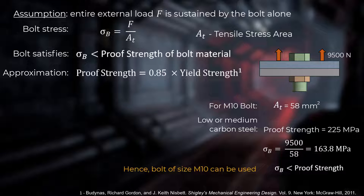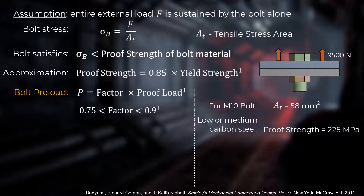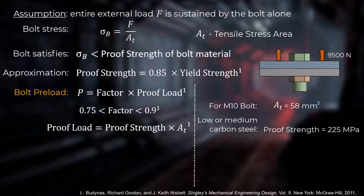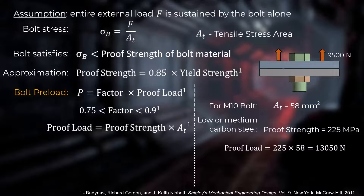Once we have picked an appropriately sized bolt, the next step is to calculate the preload to be applied to that bolt. Bolt preload is calculated based on the criteria that under normal operating conditions, the total load carried by the bolt should not exceed a fraction of its proof load. The proof load for a bolt is calculated using the shown equation. For the M10 bolt in our example, we calculate the proof load and the corresponding preload.